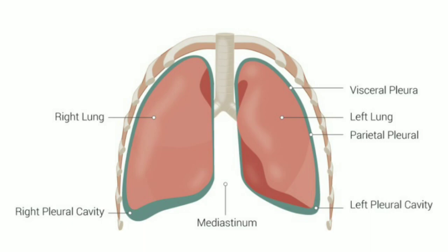The lungs are surrounded by two membranes, also called pleura. The outer pleura is attached to the chest wall, which is known as the parietal pleura, and the inner one, which is attached to the lung, is known as the visceral pleura. Between these two pleura there is a thin fluid-filled space which is called the pleural cavity.